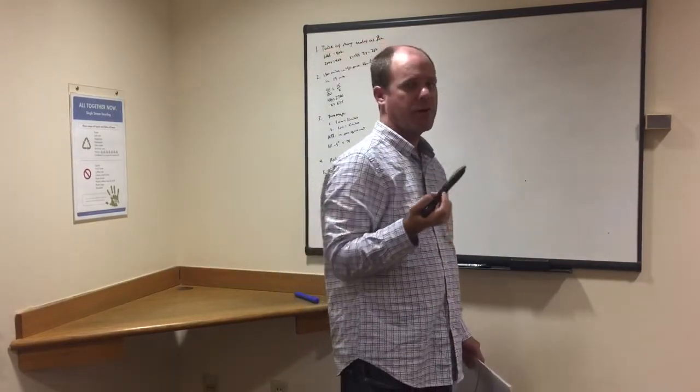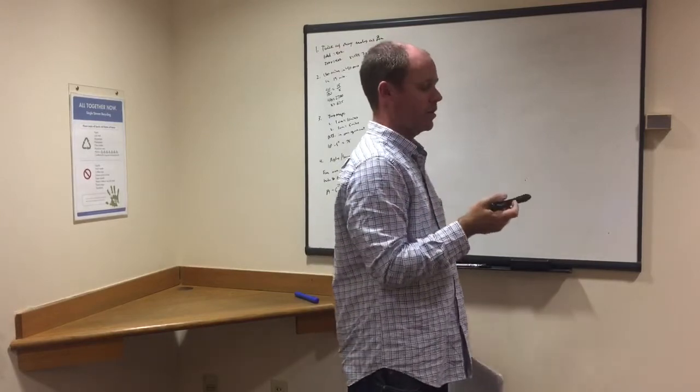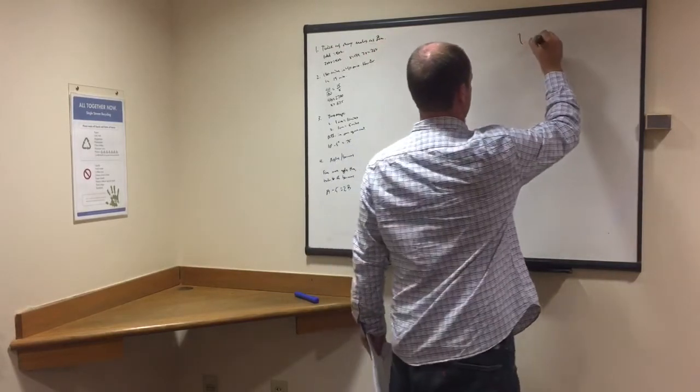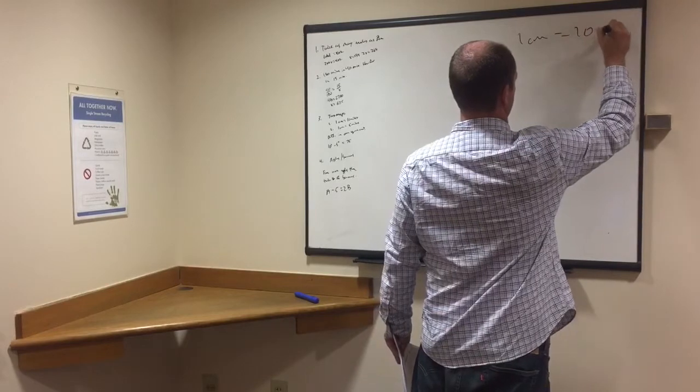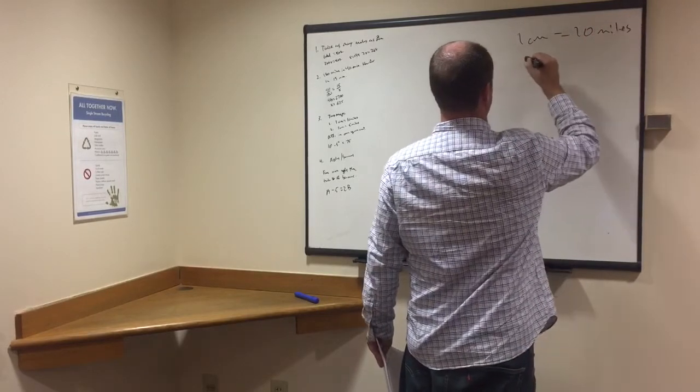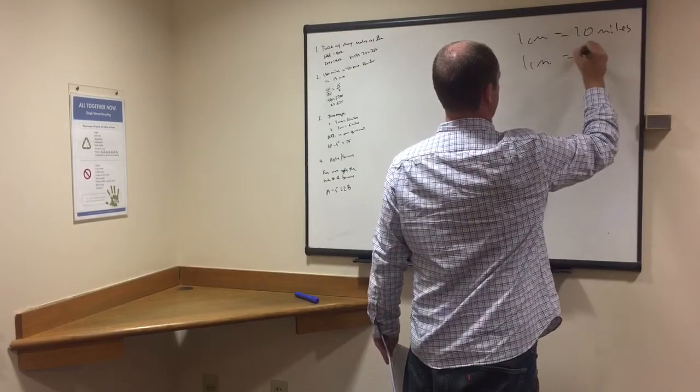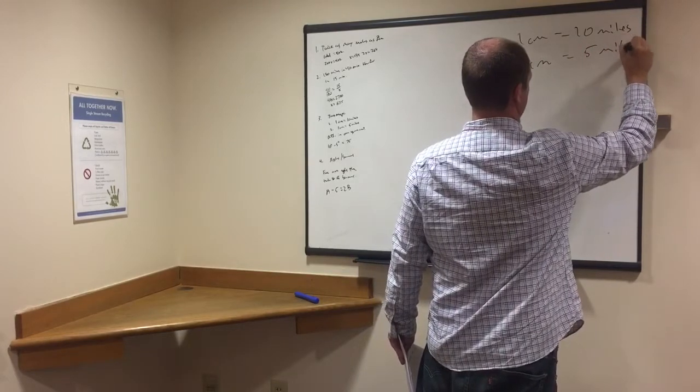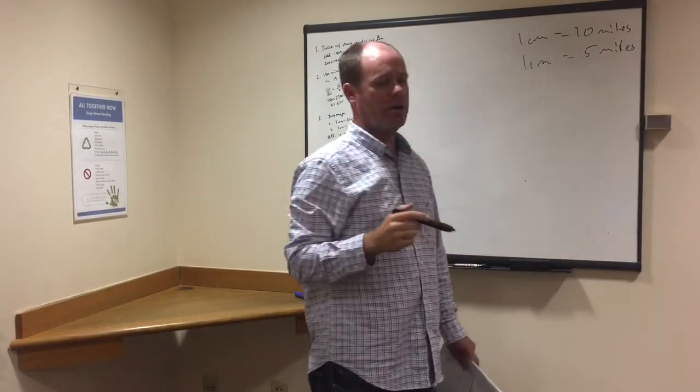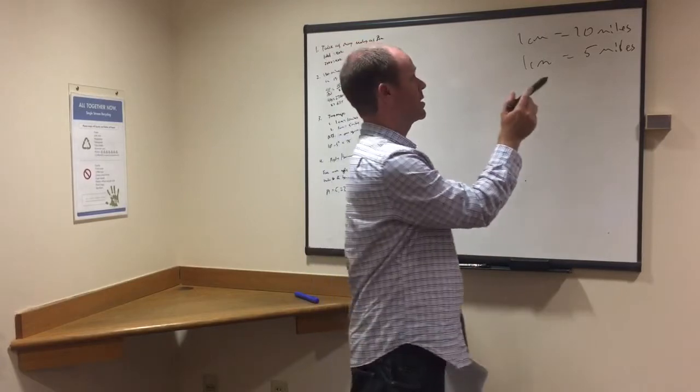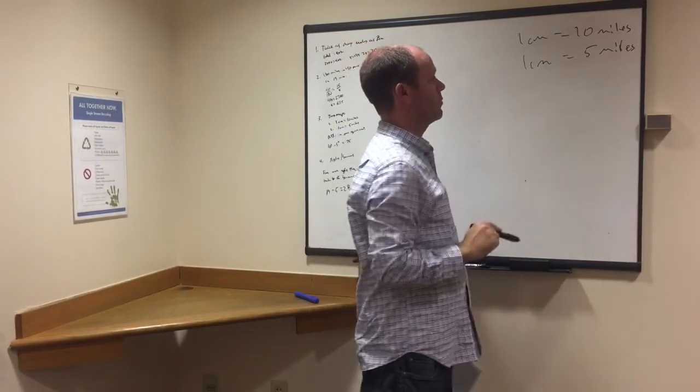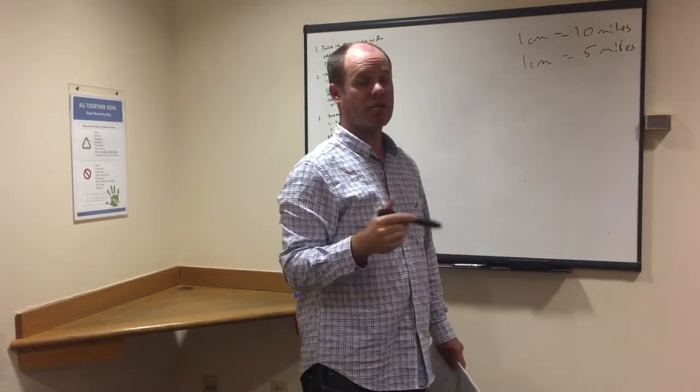Third one. Okay, so you have two maps. Two maps, when we say one centimeter on the first map equals 10 miles. On the second map, one centimeter only equals 5 miles. Okay, and then they say, what is the difference between map one and map two for one square centimeter?